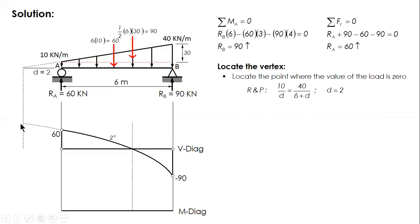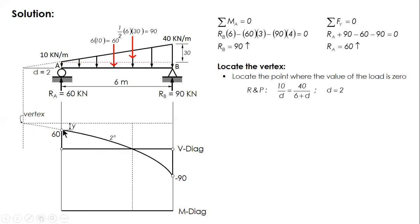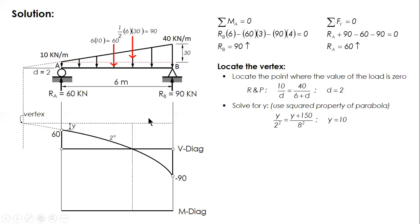Since the vertex is at the zero-load point, that is our reference for the squared property, not the endpoint. Before solving for x, we need the vertical distance from the shear value of 60 to the vertex, which we call y. Using the squared property: y over 2 squared equals (150 plus y) over 8 squared. Solving gives y equals 10.